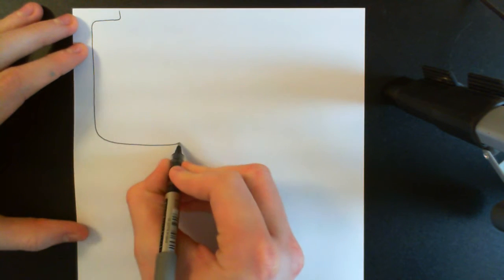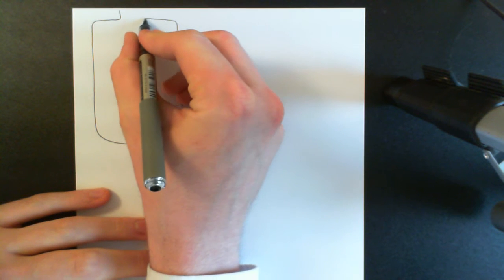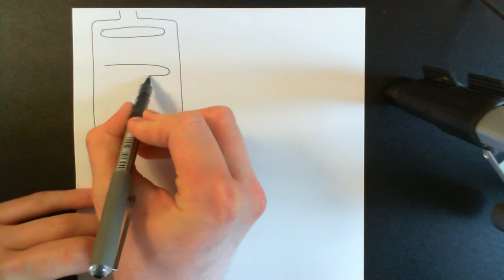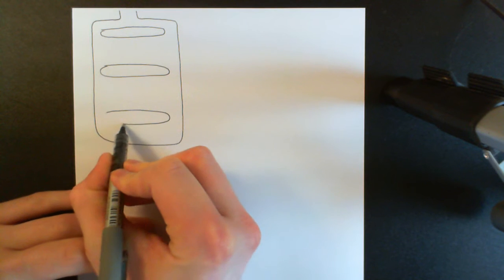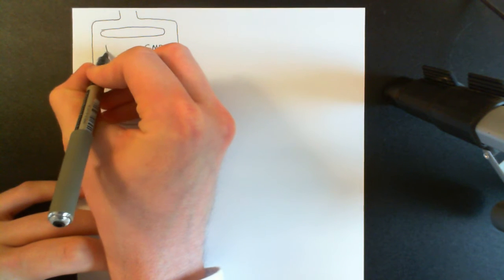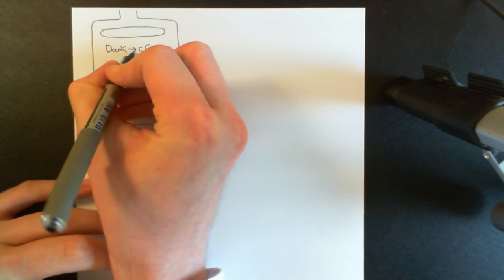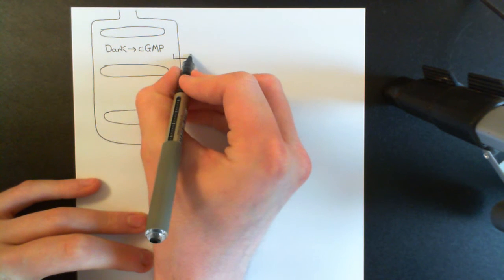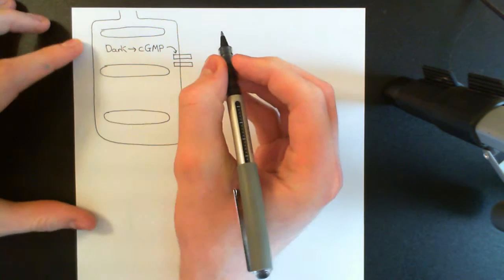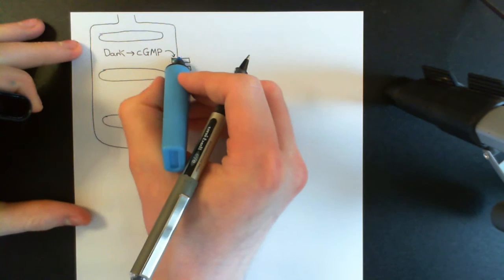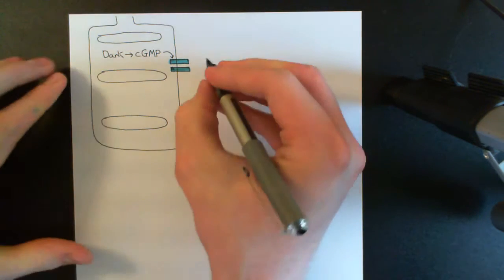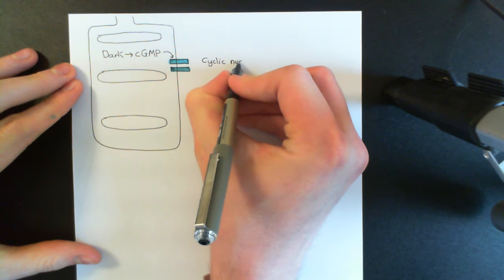So let me draw out a rod photoreceptor cell here. So this is a rod, and I'll put a few discs in here, and we now want to see what the cyclic GMP is doing in the dark. In the dark we will have some cyclic GMP in the cytoplasm of the cell, whereas this is going to be going when we're exposed to light. Cyclic GMP binds to certain ion channels known as cyclic nucleotide gated cation channels, and causes them to remain open. So cyclic GMP will bind to this ion channel, and you'll have lots of these ion channels in the cell membrane of the rod — I'll colour them in blue here.